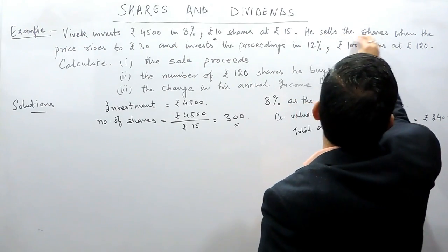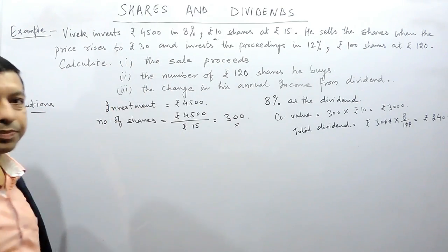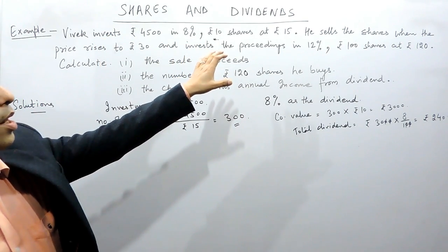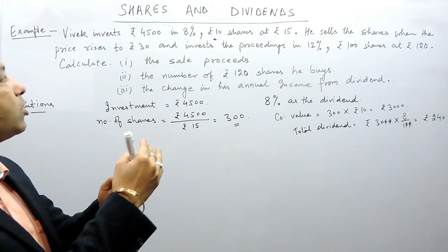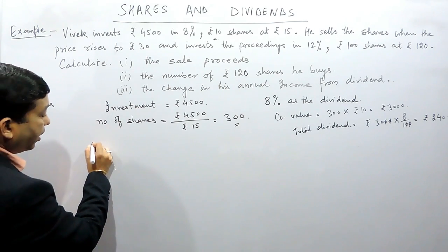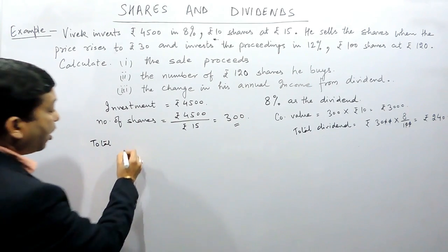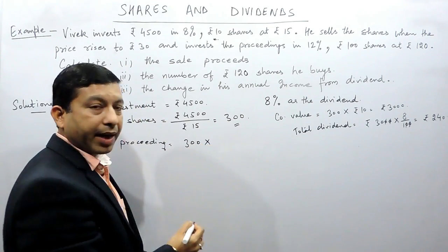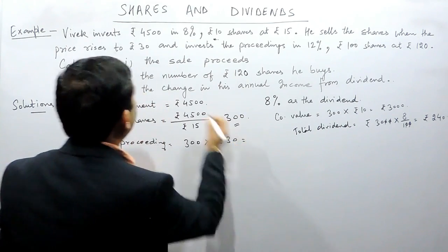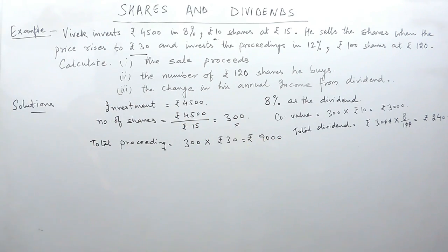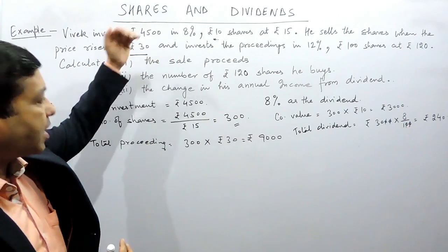Now he sells the shares when the price rises to rupees 30. Vivek had purchased the share for rupees 15, but now the market value has increased to rupees 30. So the total sale proceeds — the total money he gets back — is number of shares, that is 300, multiplied by the market value of one share, rupees 30. So the total money he receives back is rupees 9000.